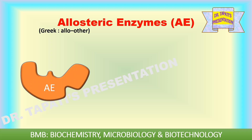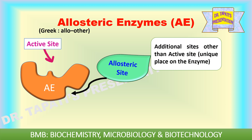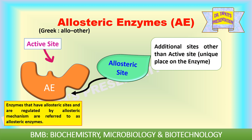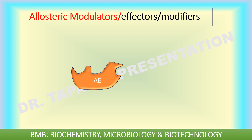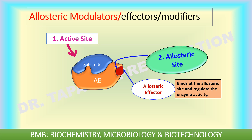Allo means other. Few enzymes contain additional sites other than the active site. Those additional sites are known as allosteric sites and such enzymes are known as allosteric enzymes. Allosteric enzymes have two receptor sites: active site and allosteric site. Substrate binds at the active site and allosteric modulator or effector binds at the allosteric site and regulates the enzyme activity.